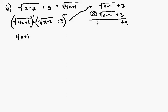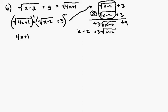3 times the square root of x minus 2 is positive 3 square root of x minus 2. Now going to the bottom expression, the square root of x minus 2 times 3 is another 3 square root of x minus 2. And then the square root of x minus 2 times the square root of x minus 2 — the square root of something squared is just the thing itself — so this just becomes x minus 2.